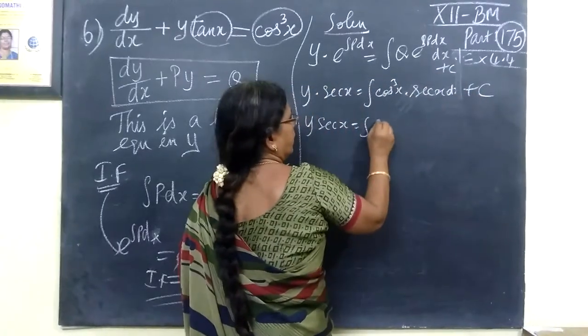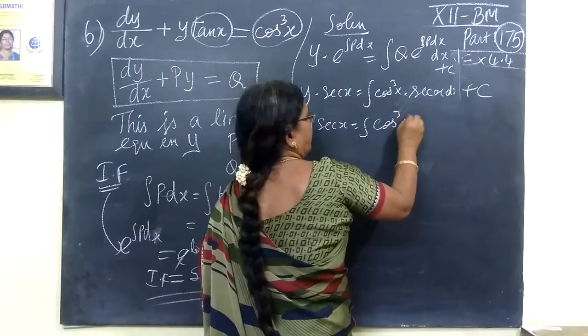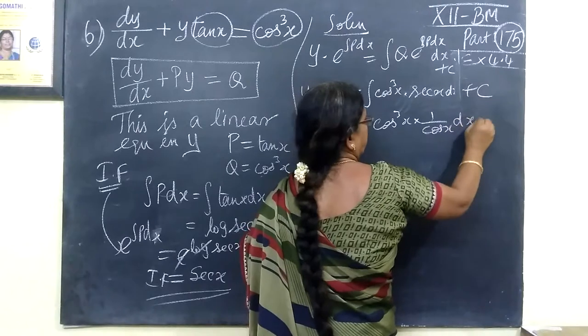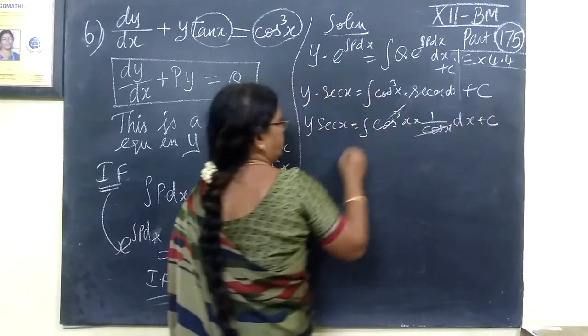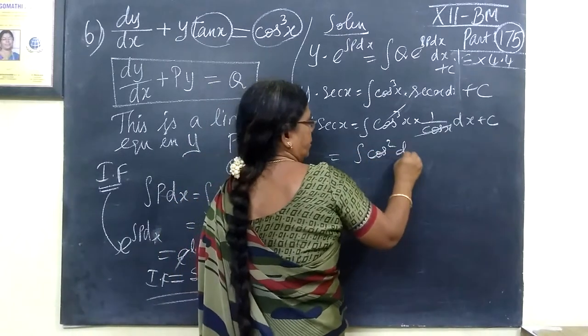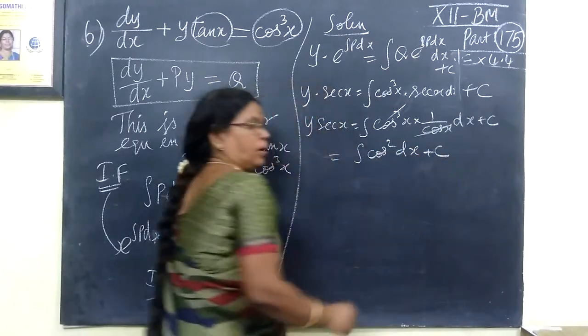So secant x is equal to 1 by cos x. So 1 by cos x dx. This is the integral. And you know cos²x is equal to 1 plus cos 2x divided by 2.